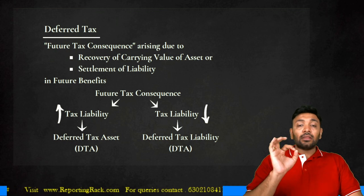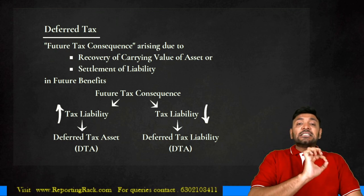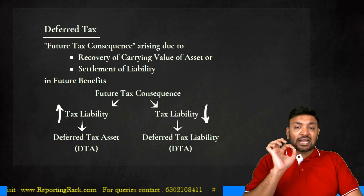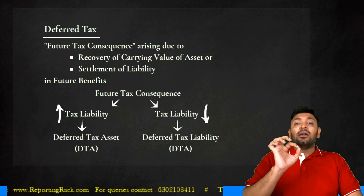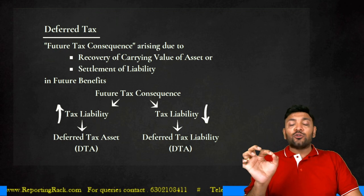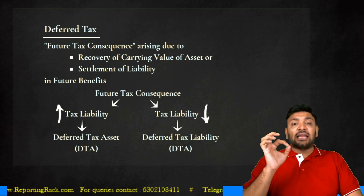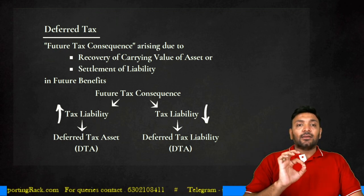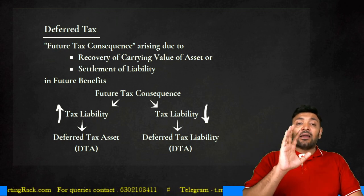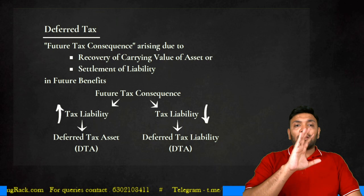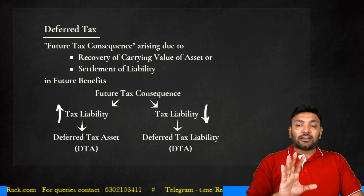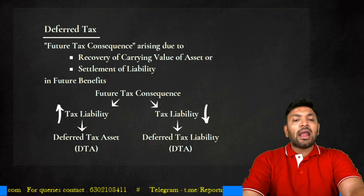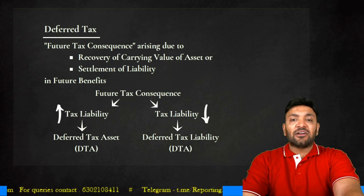In summary: an increase in future tax liability is a deferred tax liability, and a decrease in future tax liability is a deferred tax asset. This is, in short, the concept of deferred tax. How do I identify deferred tax? My determination of deferred tax involves eight different steps.